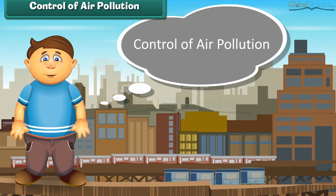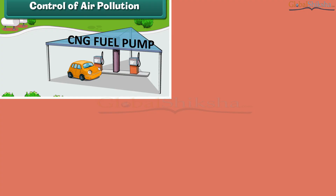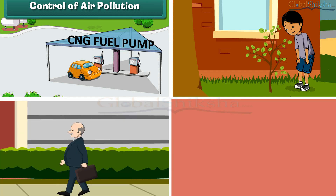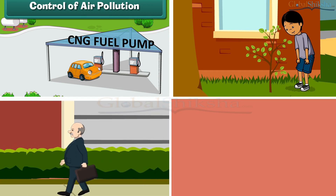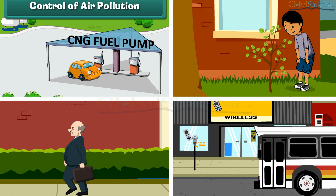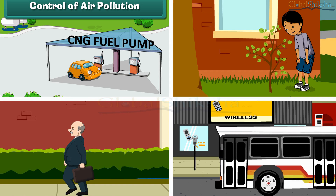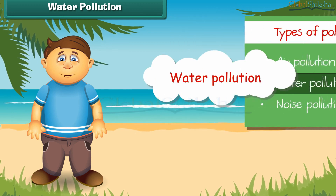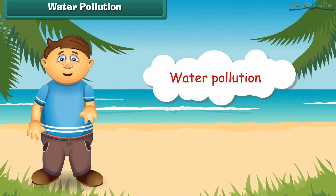Now the question is, how can we control air pollution? There are many things we can do. It can be controlled by using clean fuels like CNG in vehicles and industries, planting new young plants, preferring walking over driving, and using public transport for transportation.